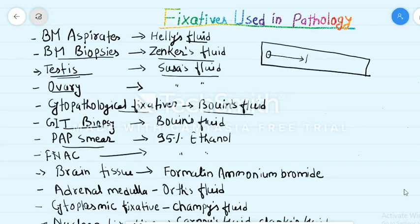Pap smear is a very hot topic — many times asked. 95% ethanol is used as the fixative in the Pap smear. For FNAC, 95% ethanol is also used. The full form of FNAC is Fine Needle Aspiration Cytopathology, or Cytology.